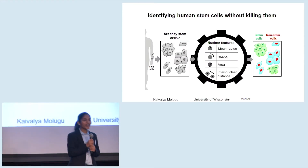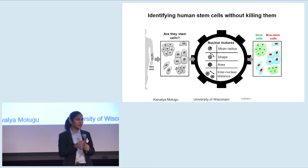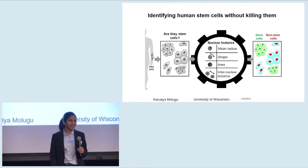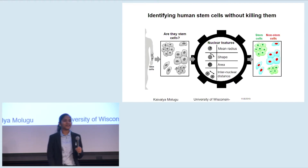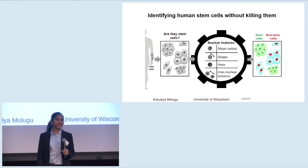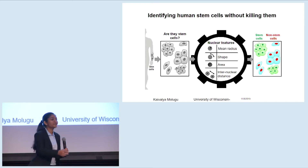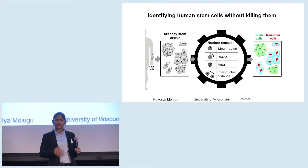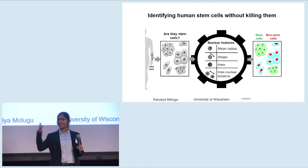Imagine if I can cure your heart disease by taking skin cells from you and then making a new heart out of it — that would be great! Hello, I'm Kaivalya. What I do is I take skin cells or blood cells from your body and convert them into something called stem cells — cells that have the ability to become any cell type in your body, like kidney cells, liver cells, or heart cells.